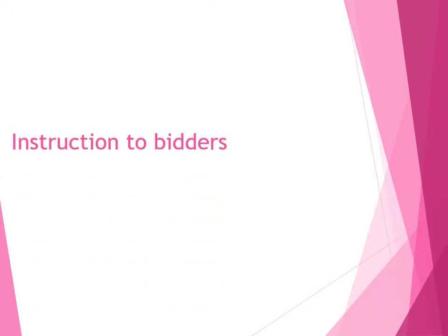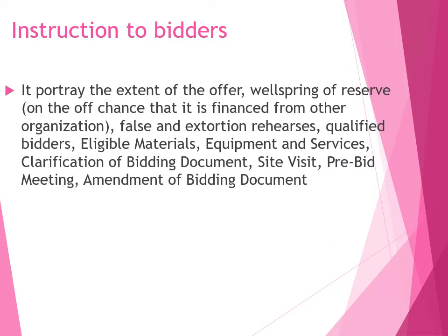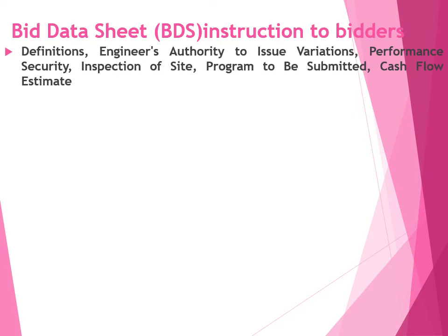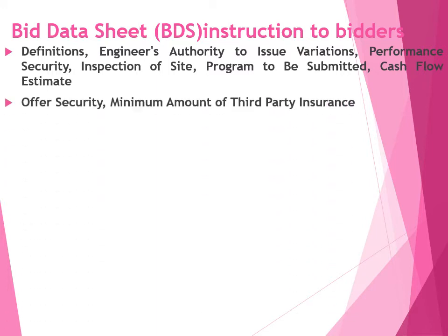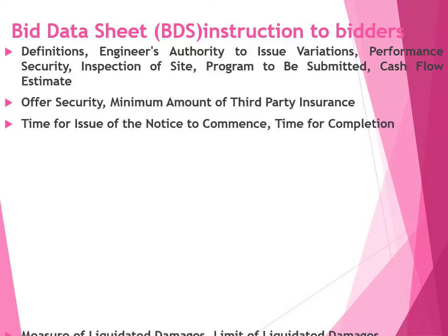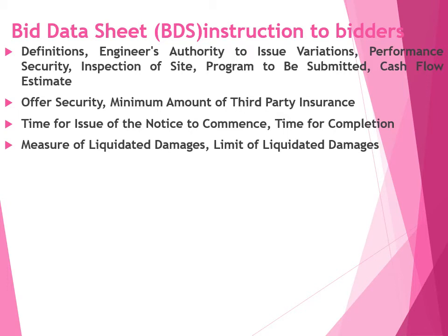A notice to bidders is the beginning instruction to the bidders. It addresses the extent of the offer, the source of funds, falls and fraud practices, qualified bidders, eligible materials, equipment and services, clarification of the bidding document, site visit, pre-bidding meeting, amendment of the bidding, and a t-off sheet. Instruction to bidders covers definitions, engineering authority to issue variations, performance security, inspection at site, program to be submitted, cash flow estimate, offer security, and minimum third-party insurance.